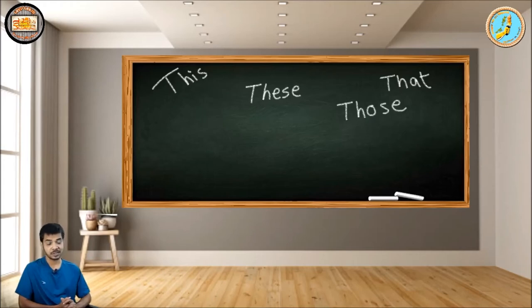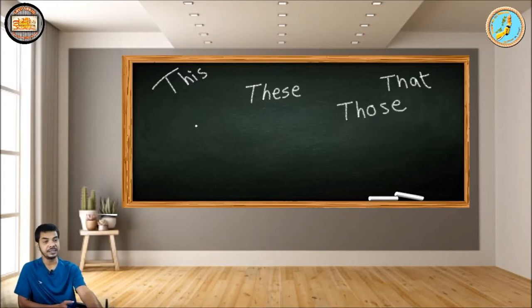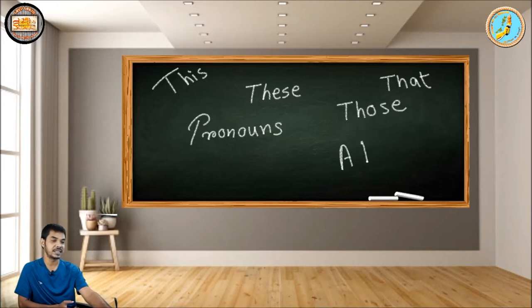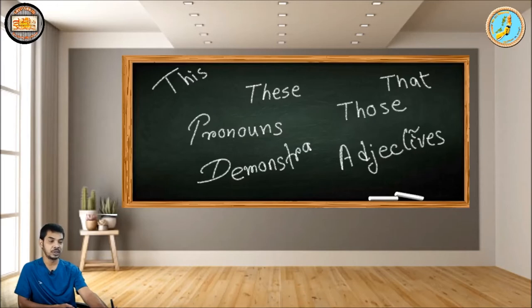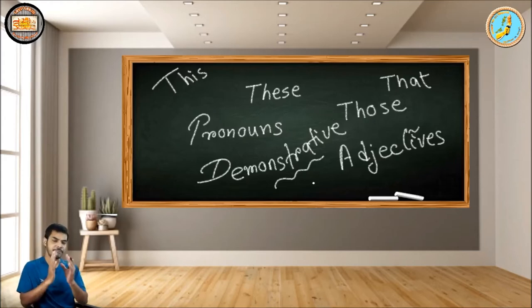They're confusing because whenever we discuss these words grammatically, they provide us options — they can either be pronouns, and at the same time they can be adjectives. If you learn adjectives or pronouns, you will see that they come both as demonstrative pronouns and demonstrative adjectives. Today I'm going to share with you a very simple trick, a very simple fact.